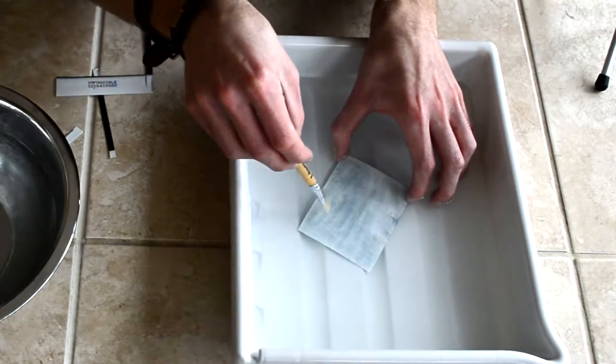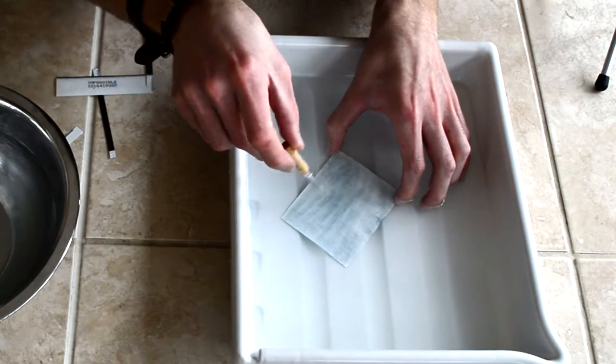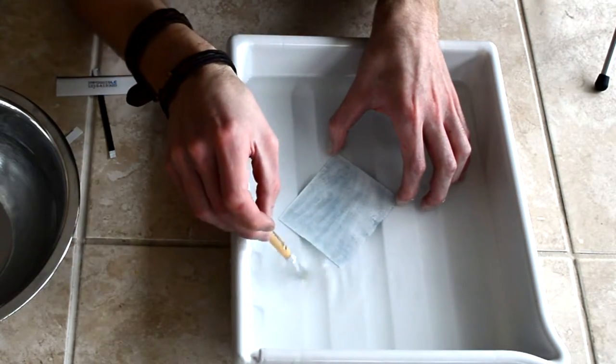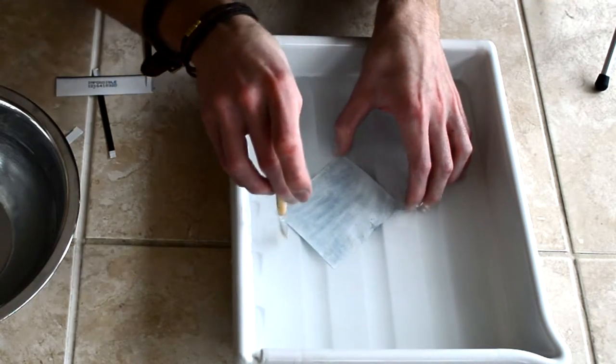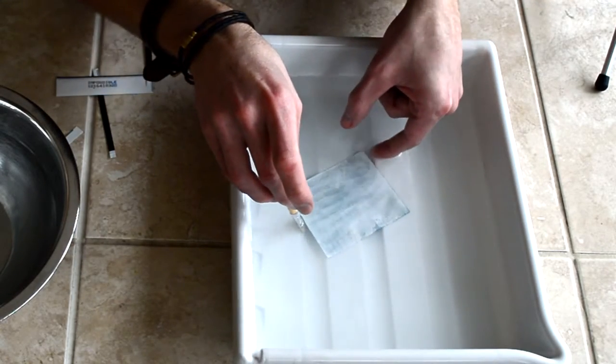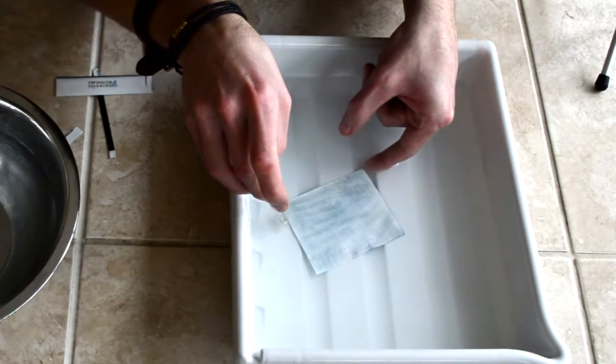Once you get to the stage where you can kind of see the image coming through on the back of it, you don't really want to brush any more with the paintbrush. Because after that stage, you'll actually be scrubbing away the image itself. You just want to wait until it starts peeling away from the plastic.